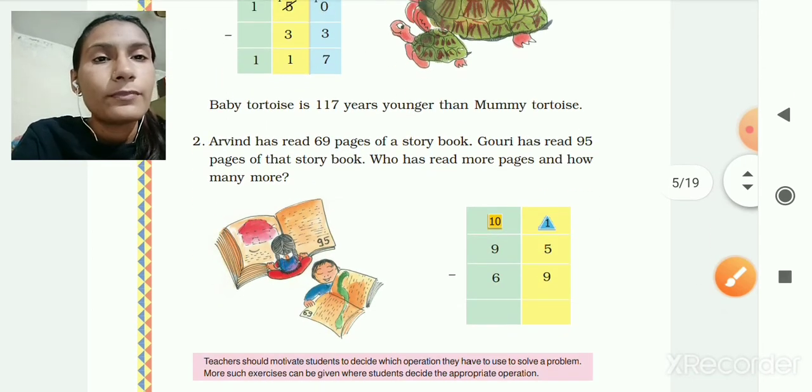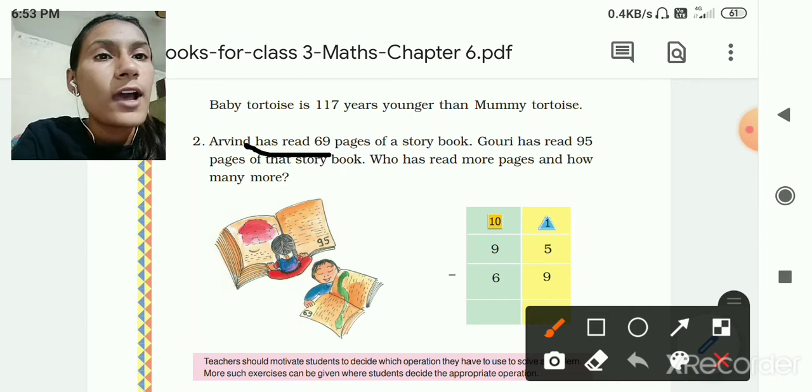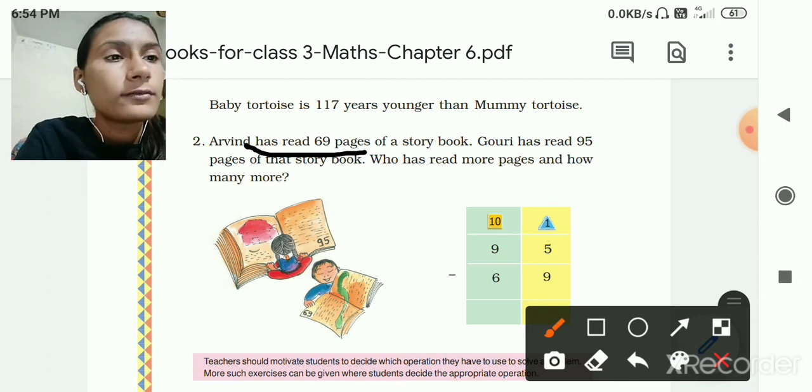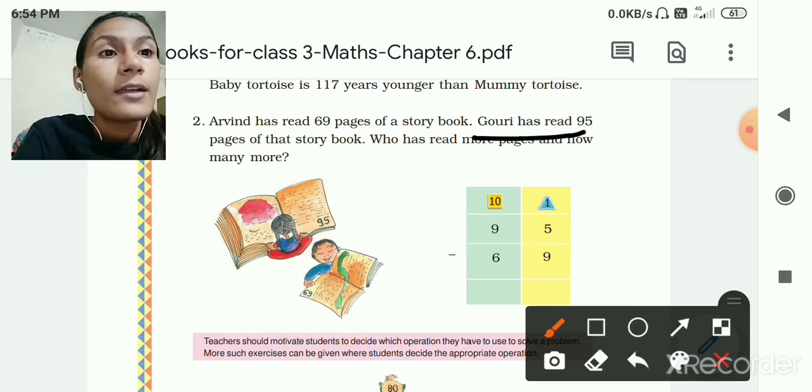The next one. Arvind has read 69 pages of a story book and Gauri has read 95 pages of that story book. Now who has read more pages and how many more? Let's find out. Here Gauri has read 95 pages, so Gauri she has read more pages. But how many more pages? So 95 minus 69.